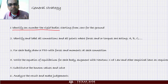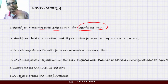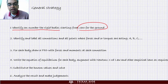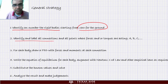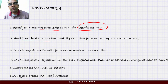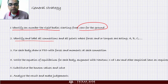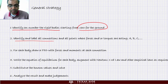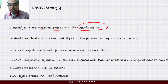First thing we do is we identify and number the rigid bodies. If you have many rigid bodies we start identifying the number of bodies starting from zero for the ground, because we should not forget the ground. Item two: identify and label all the connections. Whenever you have connections between rigid bodies, you know that connectors create blocking forces. We need to identify and label all the points where the forces and torques are acting.